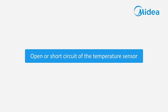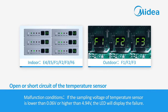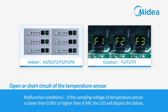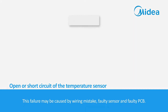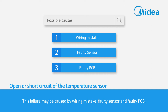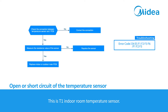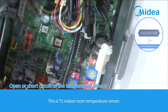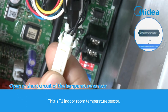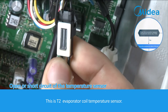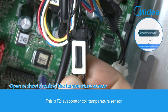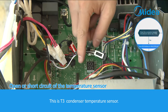Open or short circuits of the temperature sensor. Malfunction conditions: if the sampling voltage of the temperature sensor is lower than 0.06 volts or higher than 4.94 volts, the LED will display the failure. The failure may be caused by wiring mistake, faulty sensor, or faulty PCB. This is T1, the indoor room temperature sensor. This is T2, the evaporator coil temperature sensor.